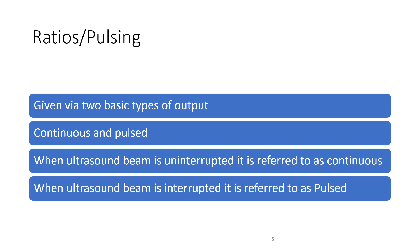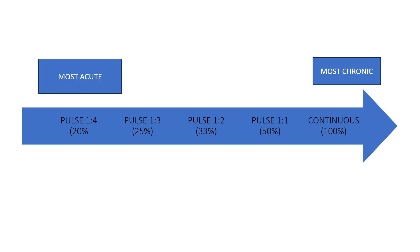We can also have continuous ultrasound where there are no rest periods. With pulse settings, imagine a continuum from the most acute to the most chronic injury and select pulse settings accordingly. If pulse settings are not available on your device, select the closest alternative as a compromise. The selection of the most appropriate pulse ratio essentially depends on the state of the tissue. More acute tissue is more energy sensitive and responds more favourably to energy delivered with a large pulse ratio and a lower duty cycle. As the tissue moves away from its acute stage, it responds better to a more concentrated energy delivery, thus reducing the pulse ratio or increasing the duty cycle.